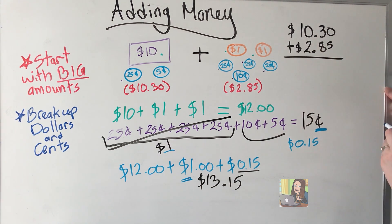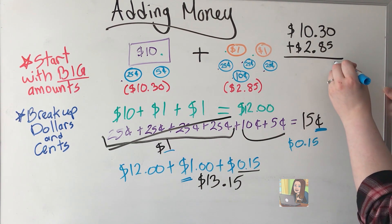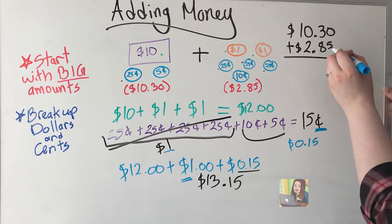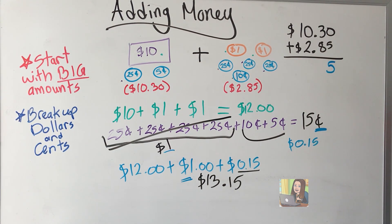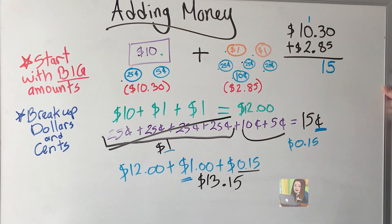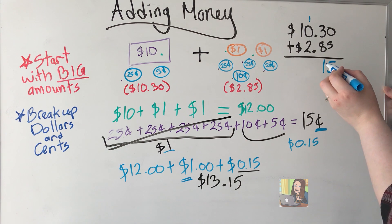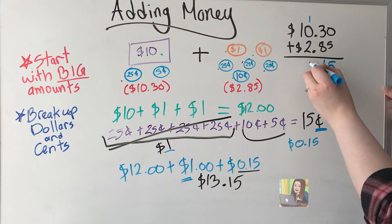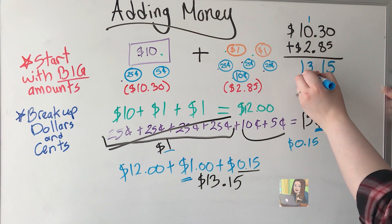So $0 plus $5 is $5. $3 plus $8 is $11. 1 goes down there. Carry the other one. $2 plus $0 is $2. $1 gives me a $3. And then $1 plus $0 is $1.